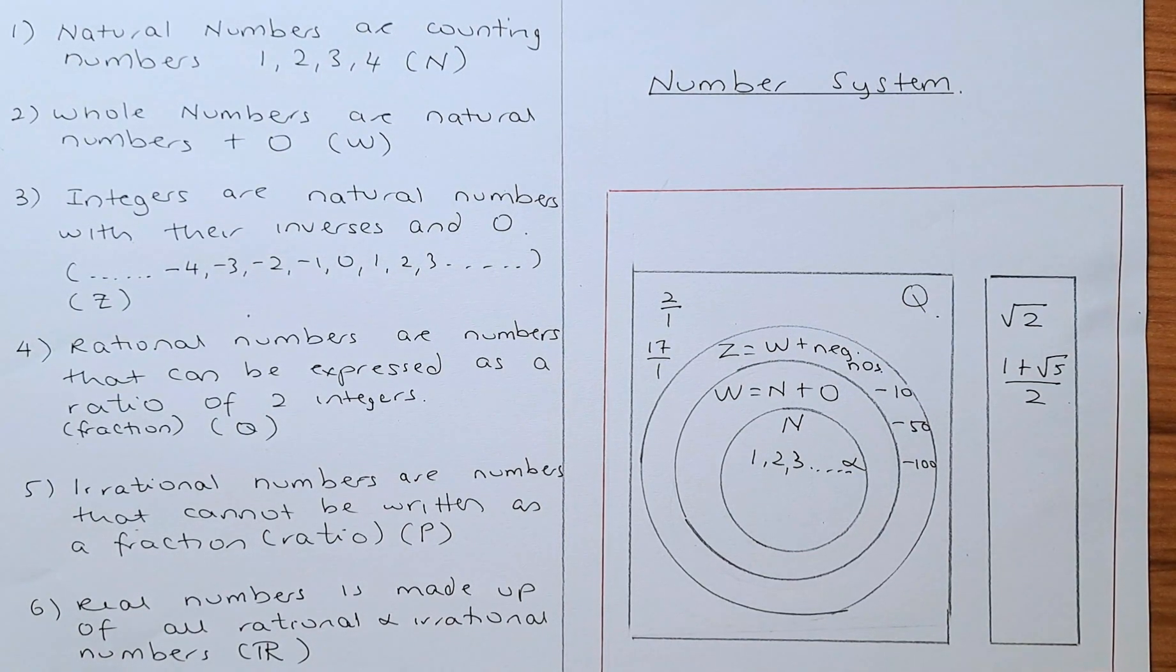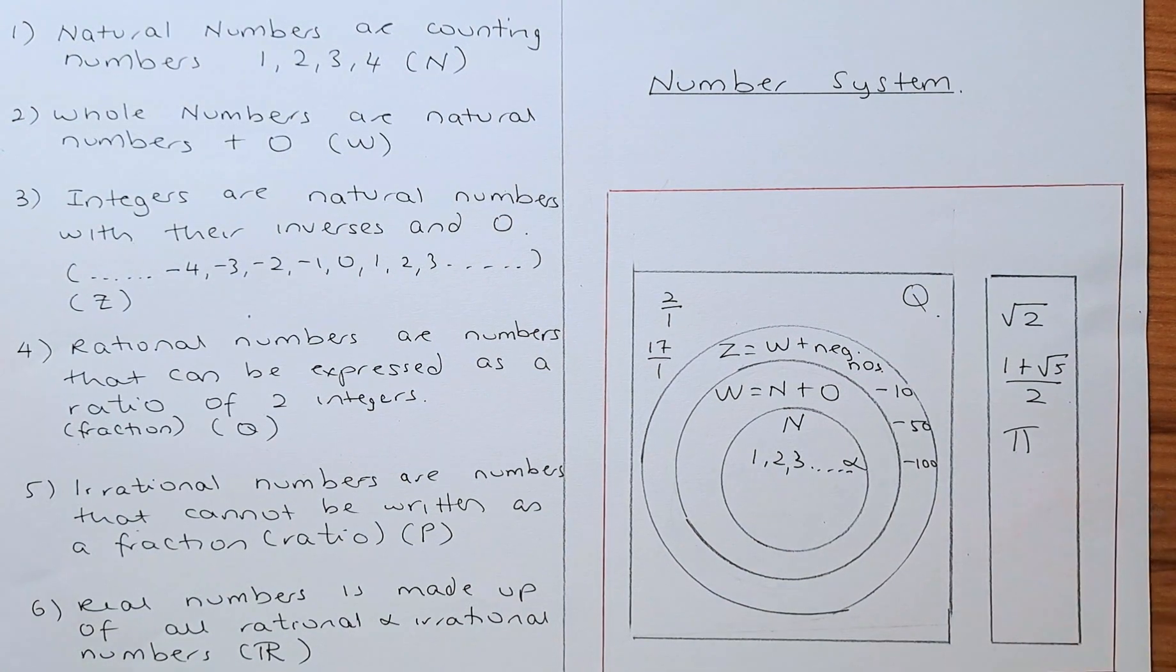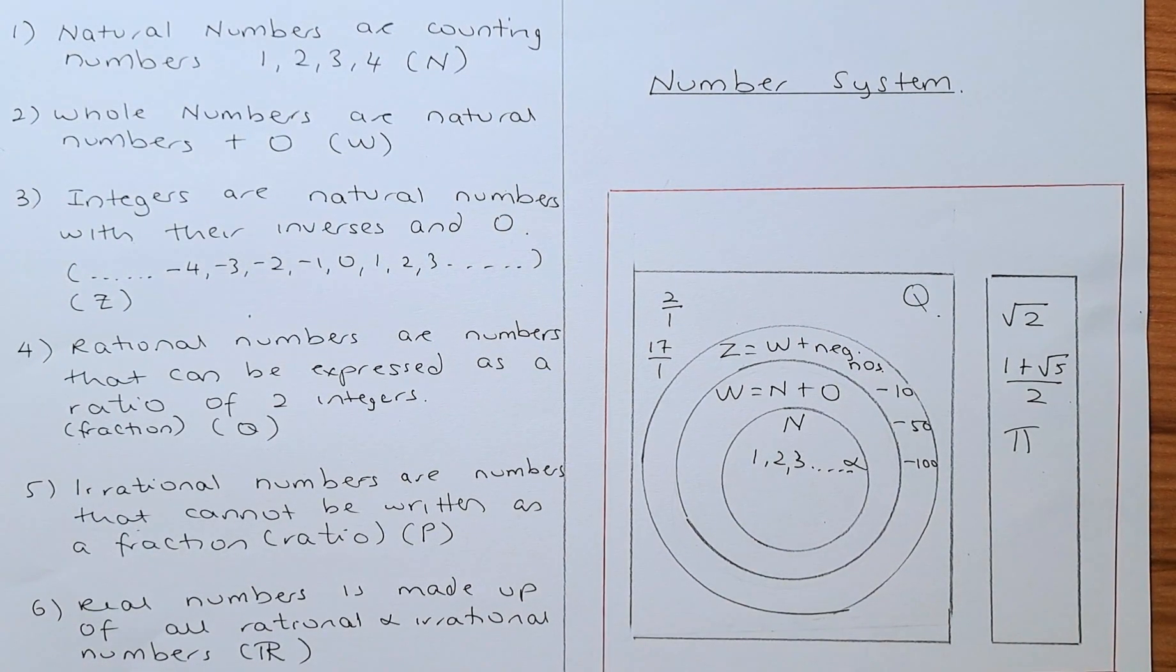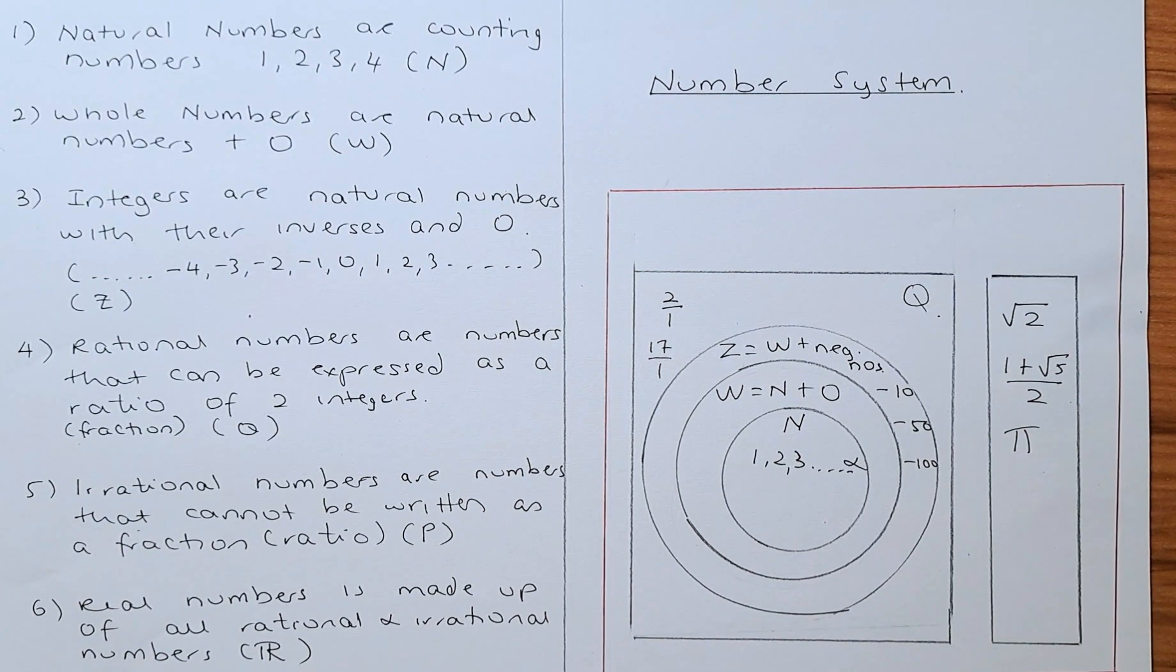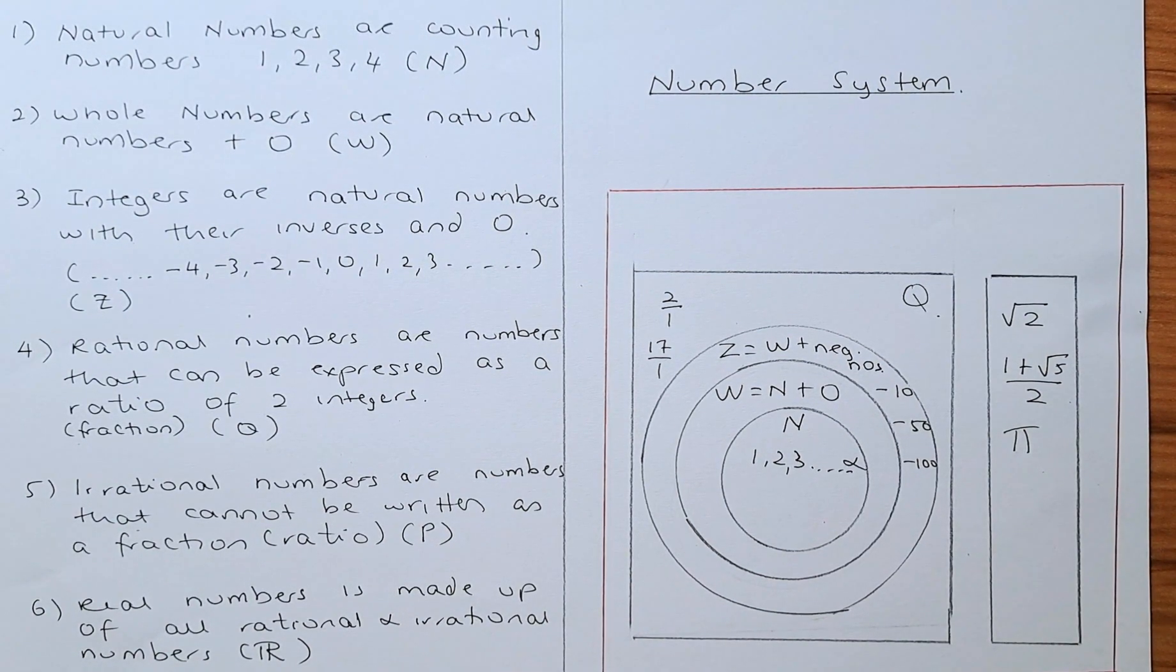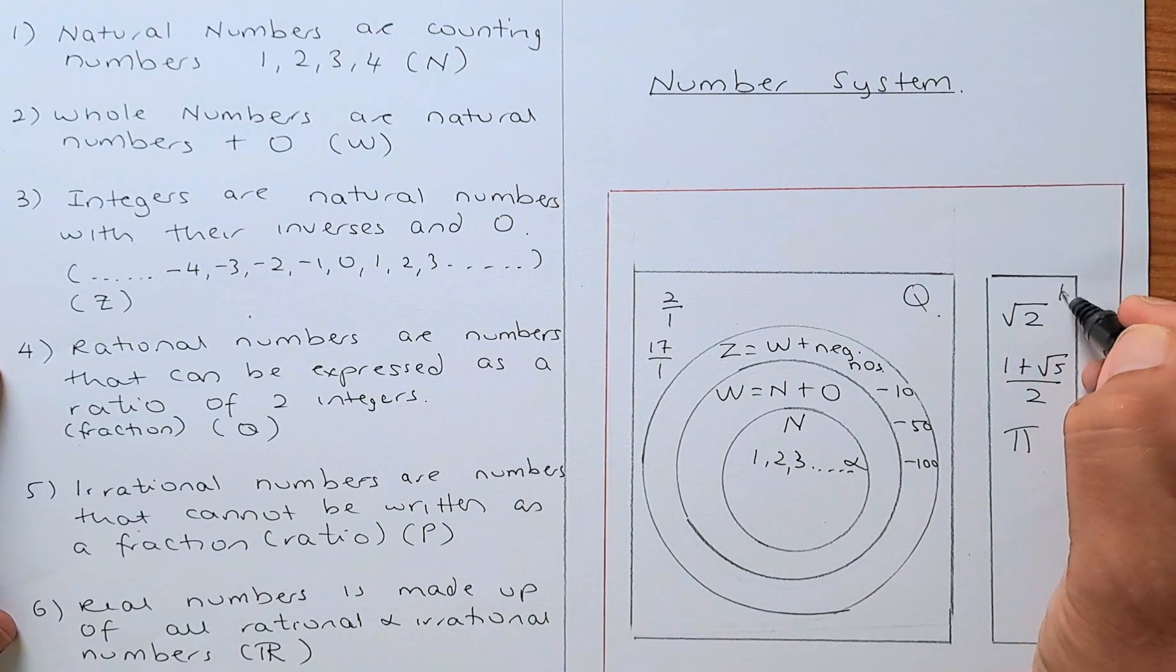And another famous irrational number is pi. Pi is 3.1419265 and a lot more numbers than that. So these are called irrational numbers, and they are represented by the letter P.